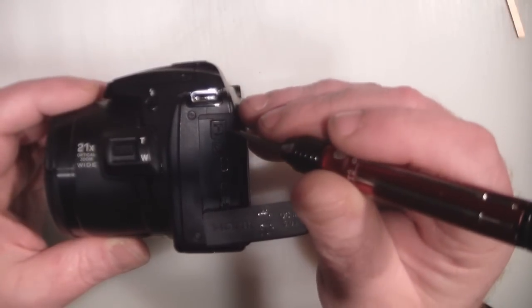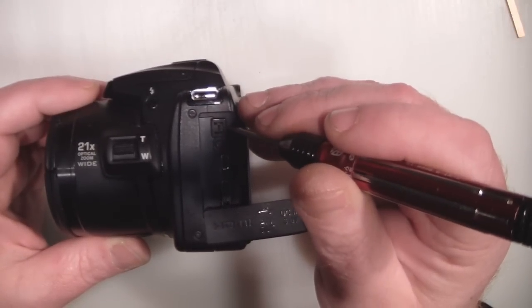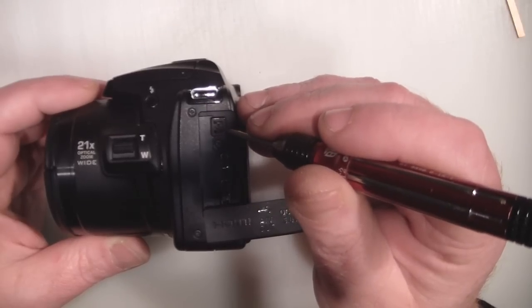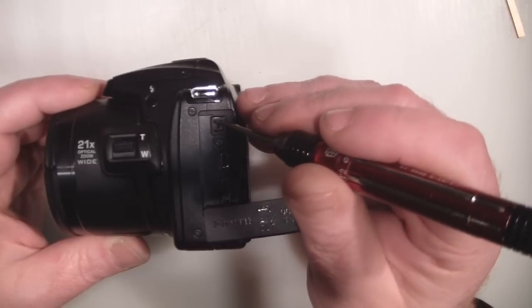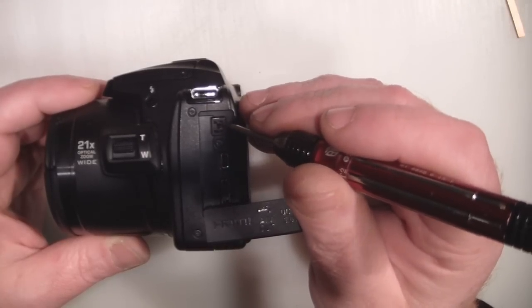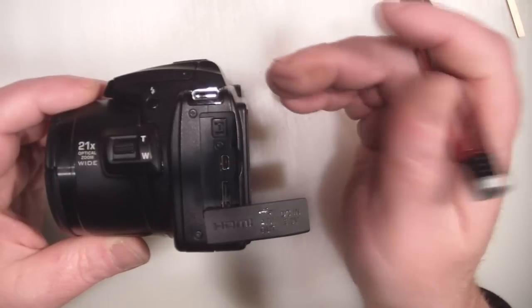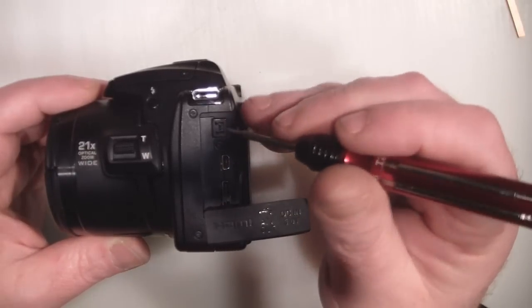On the data sheet itself it states that the bottom of this connector here is the negative and the top part is the positive. It is a funny shaped connector and doesn't seem to be standard on all the Nikon Coolpix range.